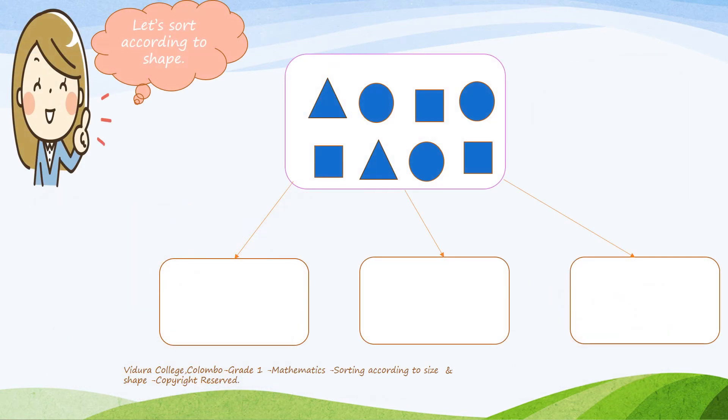Next up, we need to learn about how to sort things according to their shapes. Now, we have different shapes here. Here you can see triangles, circles and squares. Let's sort according to shapes.